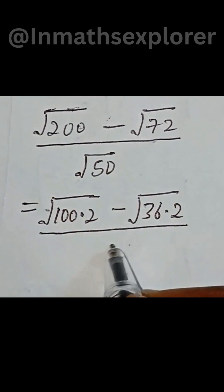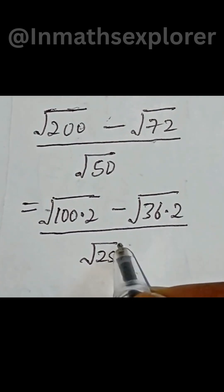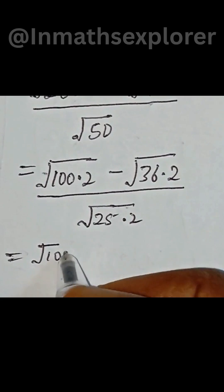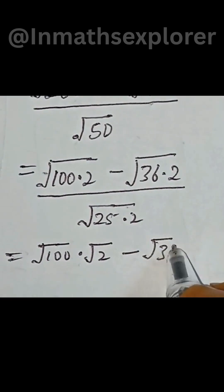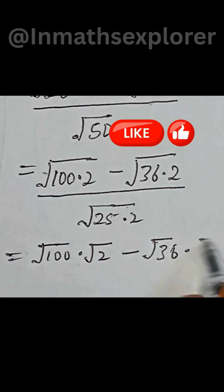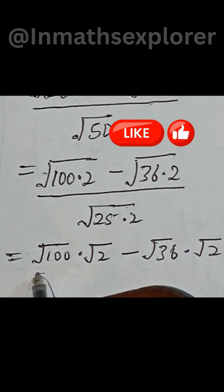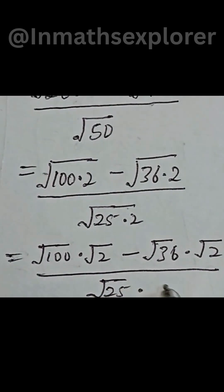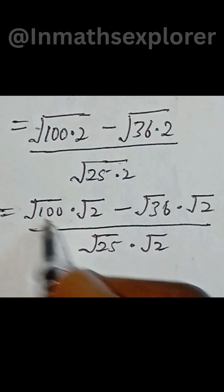All over 5 times square root of 25 multiplied by 2. This is equal to square root of 100 multiplied by square root of 2, minus square root of 36 multiplied by square root of 2, all over square root of 25 multiplied by square root of 2.